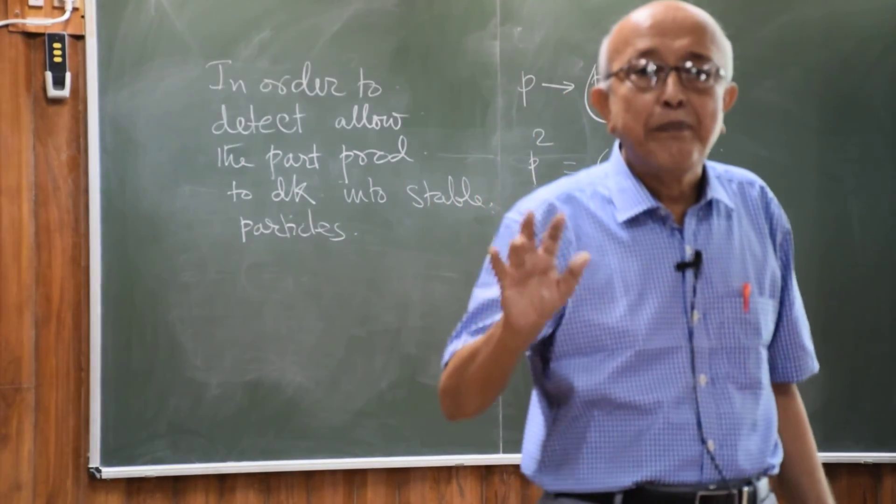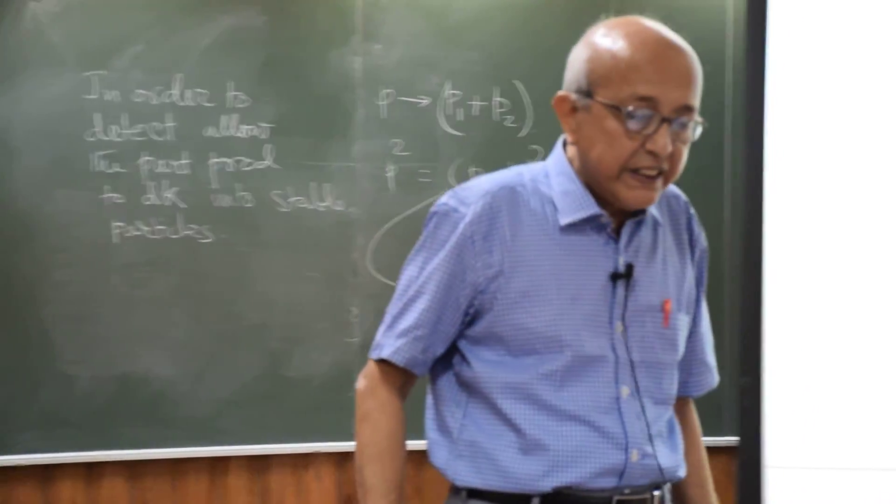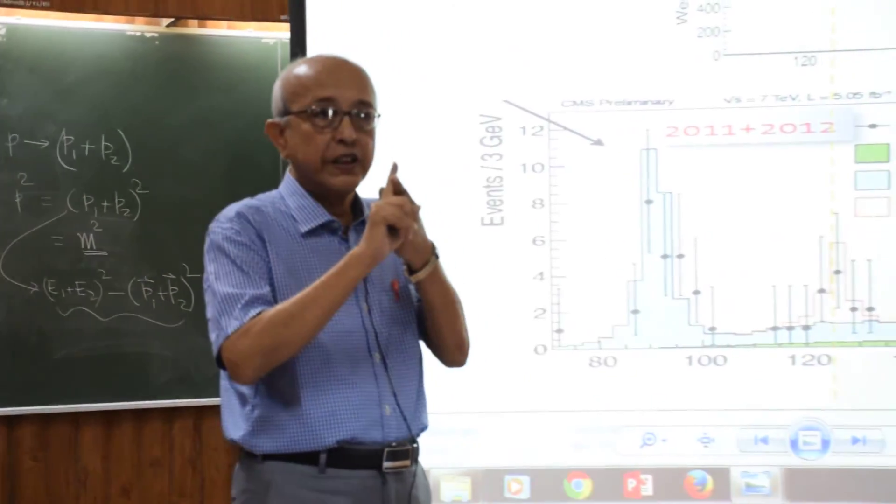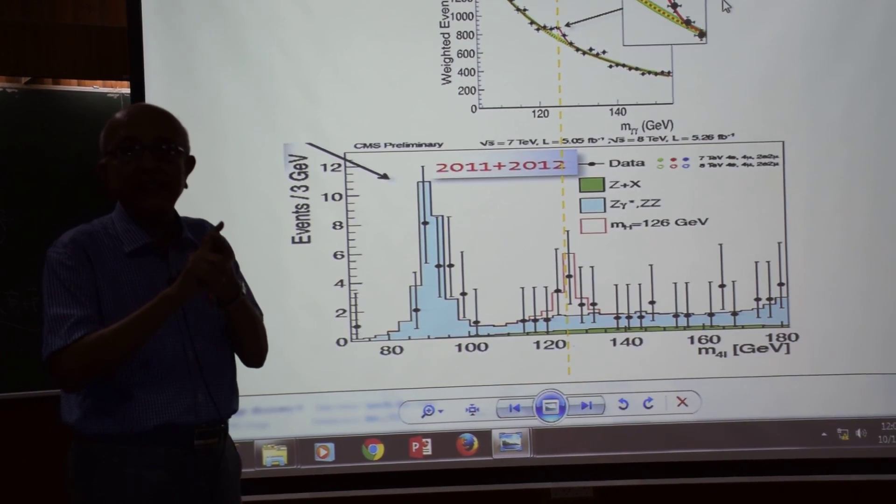So what the experiment did in the barest minimum term is that they looked for two photons. You see, the photons are detected by their electromagnetic calorimeters.